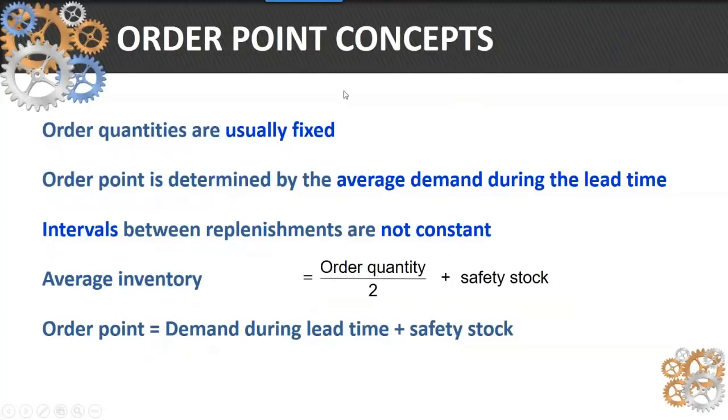Here's some reorder point concepts. The order quantities are usually fixed, where that EOQ or that lot size is normally the same. Reorder point is determined by the average demand through lead time, so if you're going to use reorder points, you need to recalculate demand every single month or every single period.